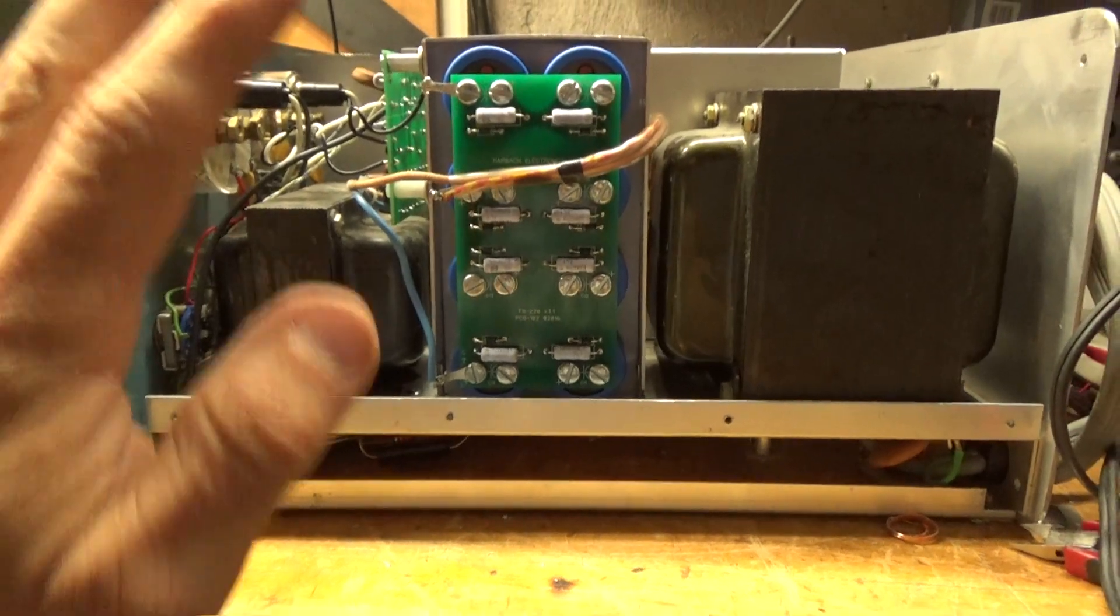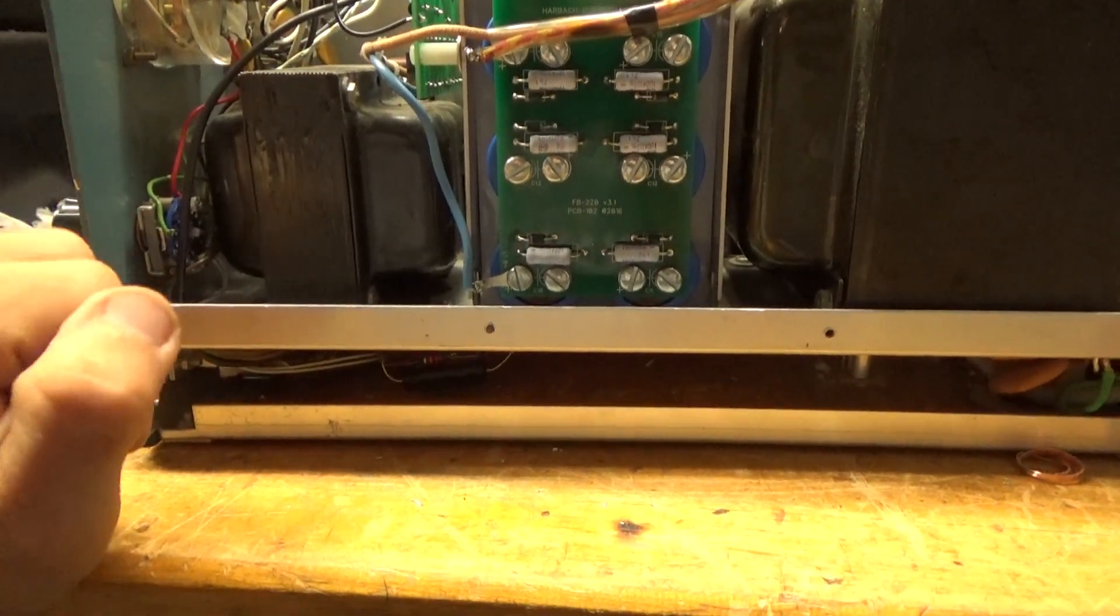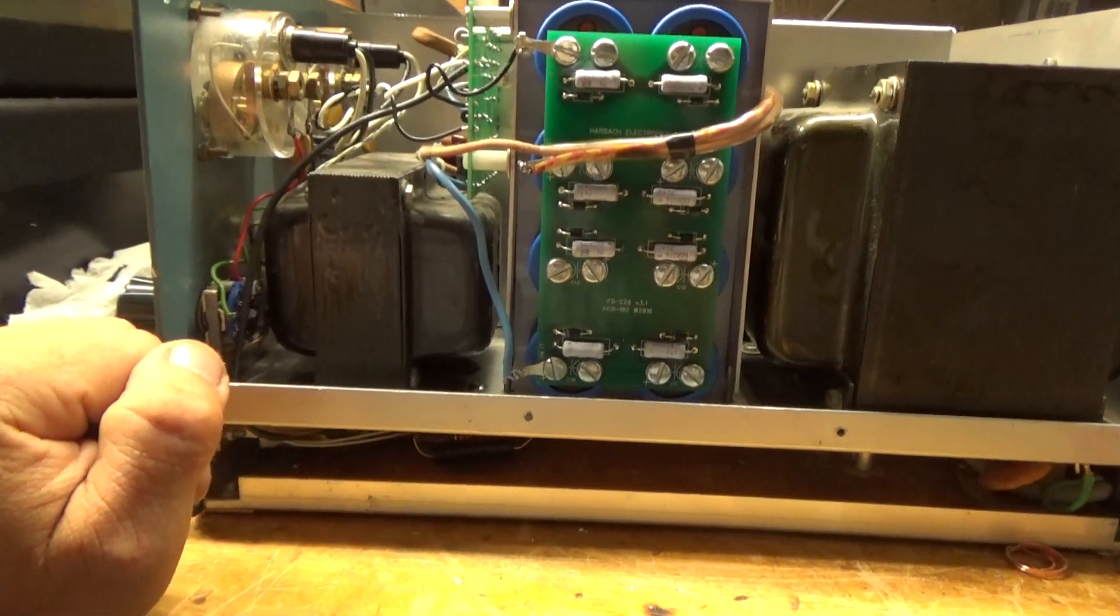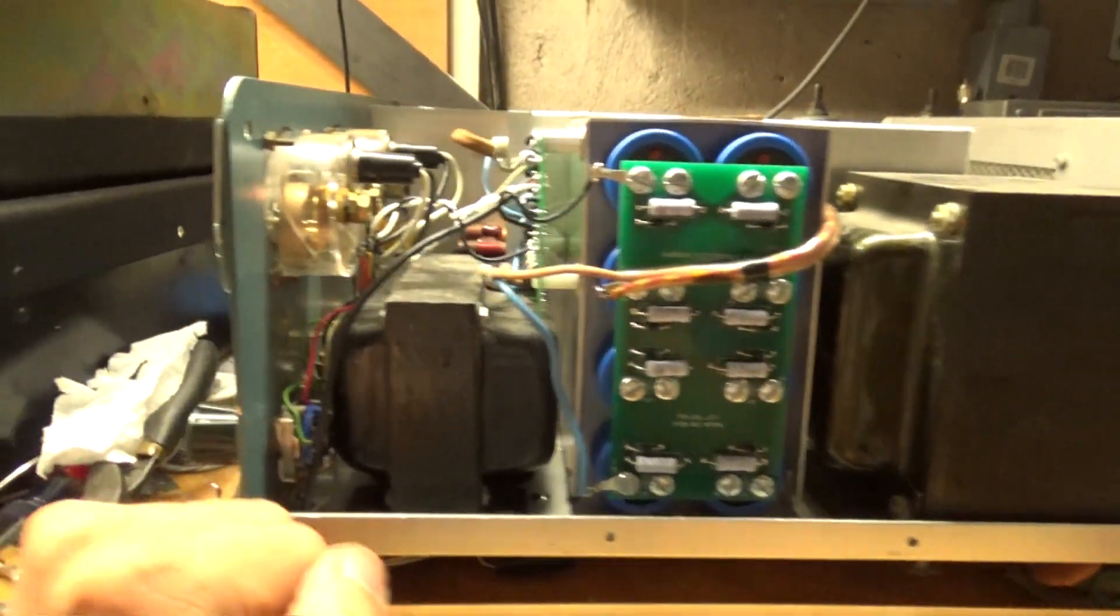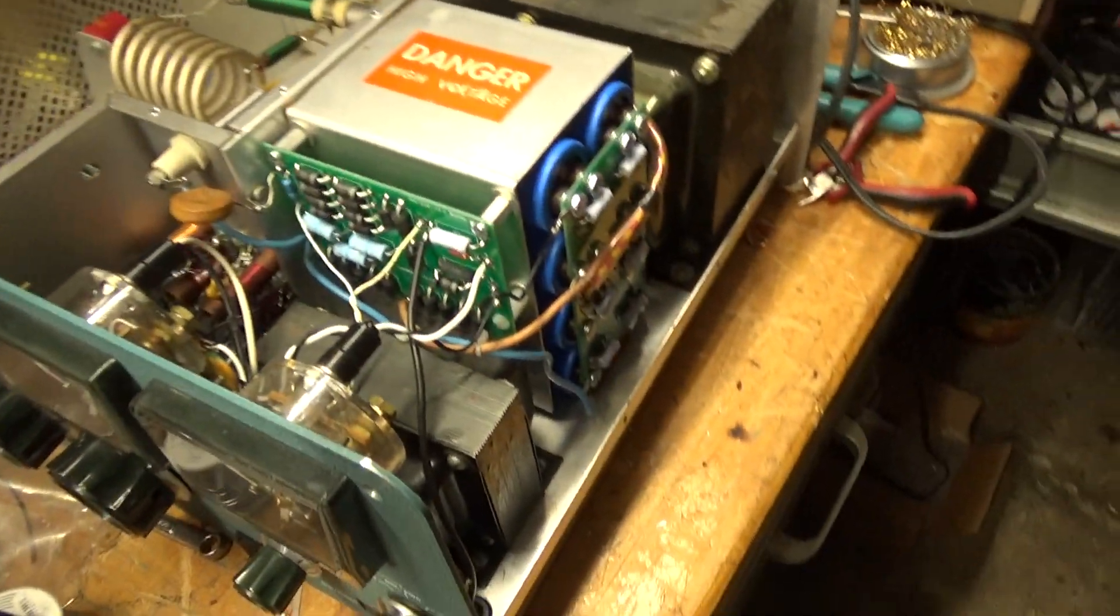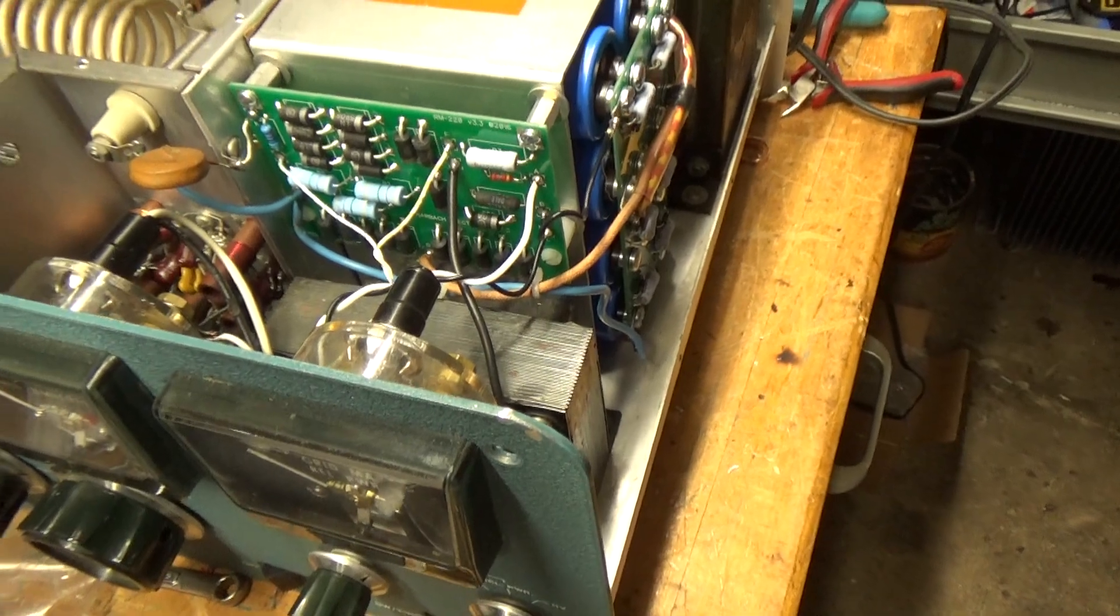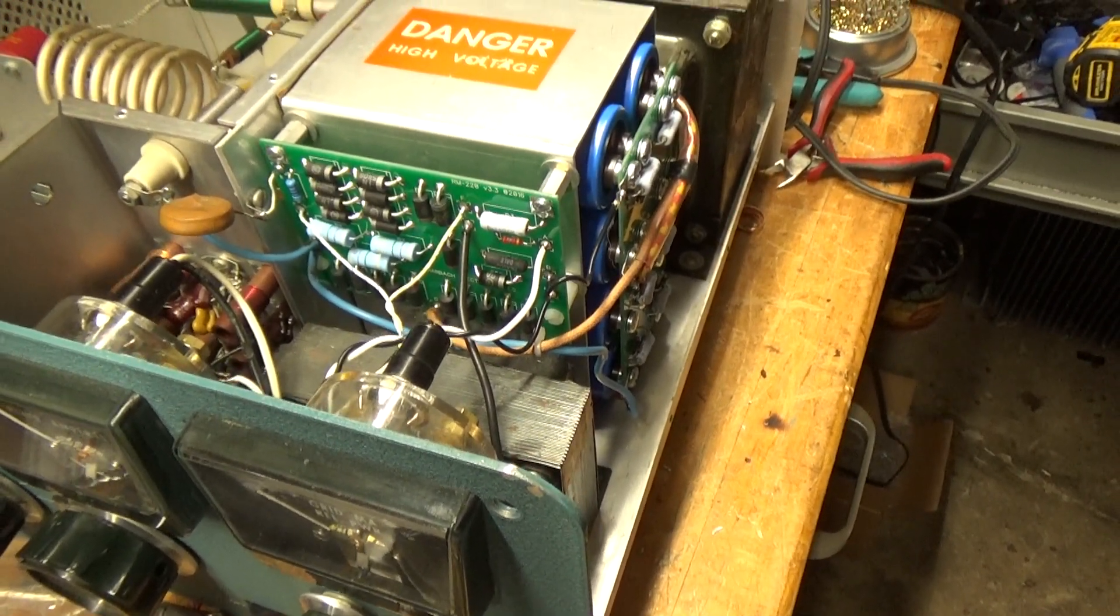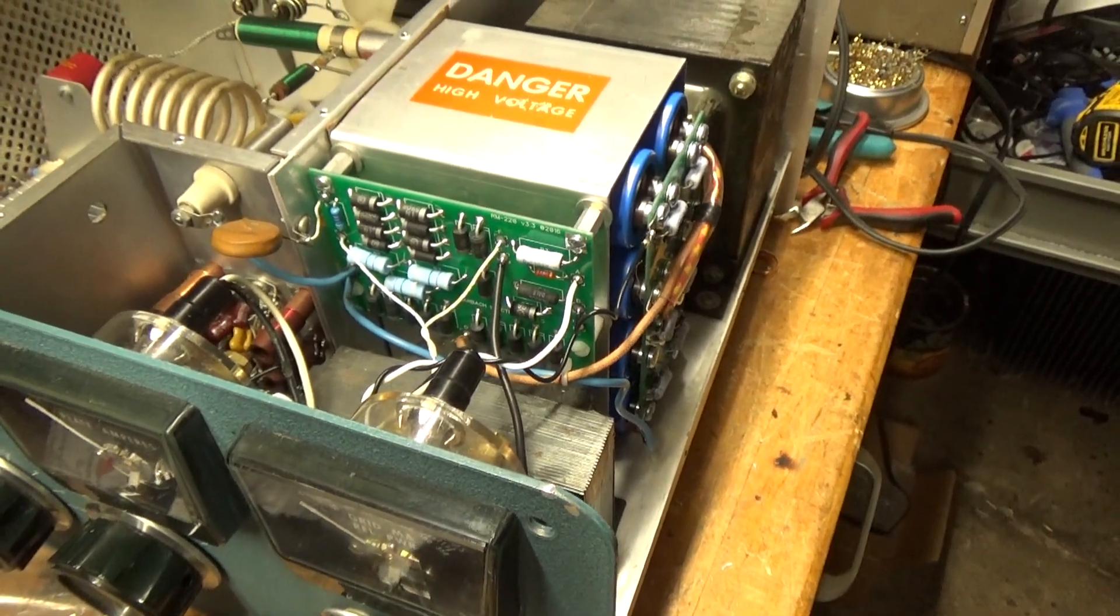Just way better than it was back in the day. Now, with the metering board, you have the bias diodes mounted right to the board. You have the meter protection diodes.